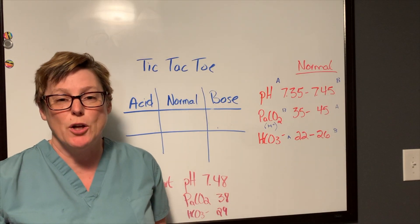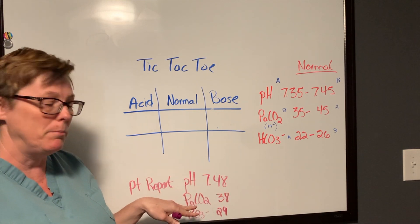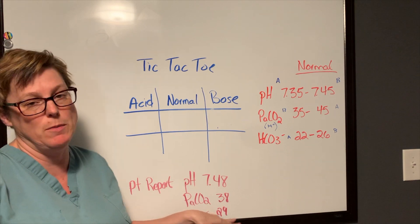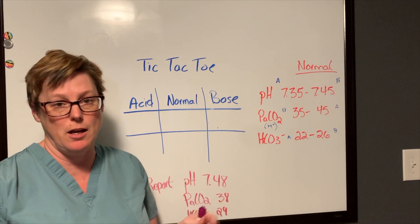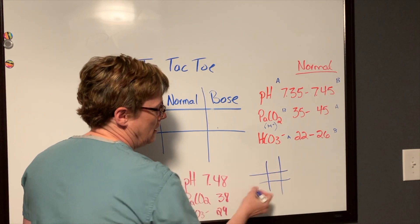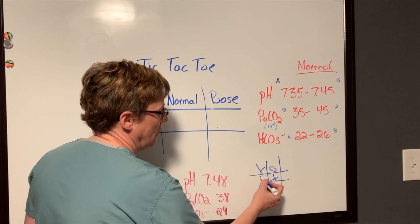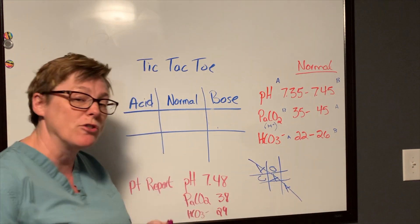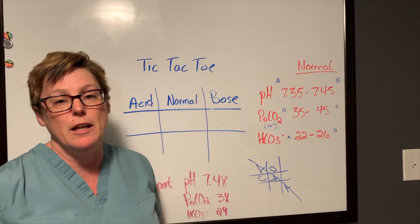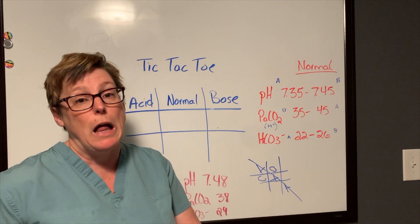So we have a patient's results in front of us: a pH of 7.48, partial arterial CO2 of 38, and bicarb is 29. So much like when we played tic-tac-toe as kids, only we used X's and O's — you would take turns filling this in until somebody got a straight line. We're going to do the same thing here. We're looking for our values to line up to help us determine if we are acidotic or alkalotic.